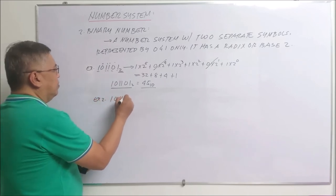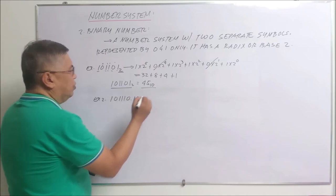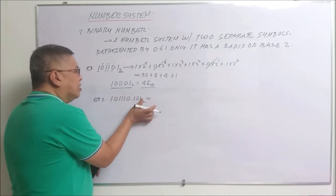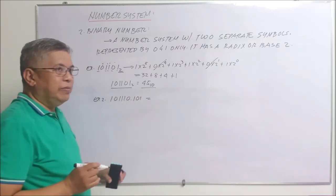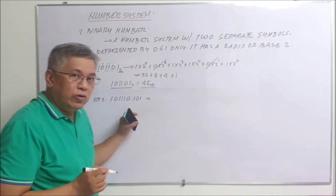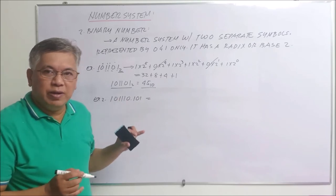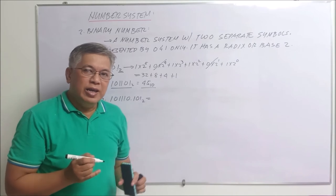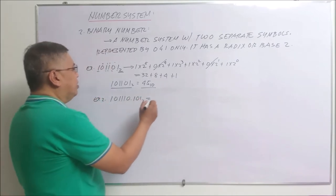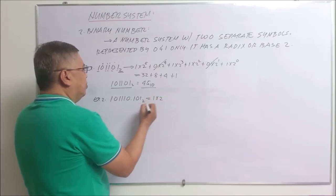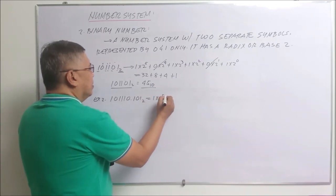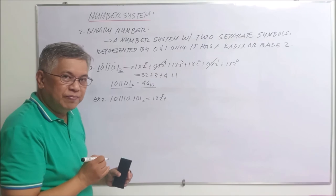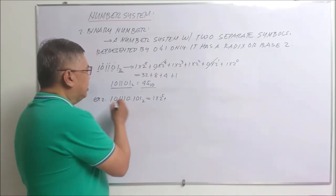Another example: say you have 101110.101 base two. How do we obtain the positional notation? Without the subscript two, this number could be a decimal number, an octal number, or a hexadecimal number — that is why the presence of the base tells us this is a binary number system. Also, the point here is called the binary point, not decimal point, because this is a binary number system.